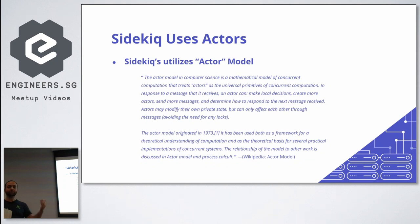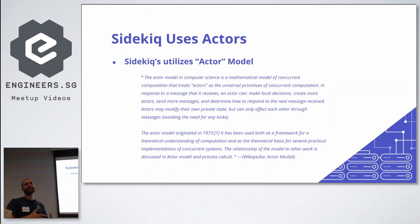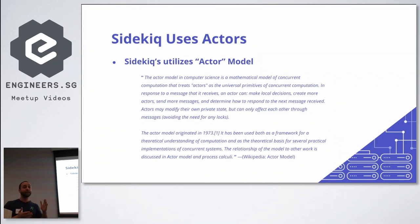Sidekiq started in earlier versions using Celluloid, a concurrency gem. But as Sidekiq evolved, Celluloid had a lot of memory overhead on performance. Starting around Sidekiq 4, the maintainer and team rewrote Sidekiq completely to remove Celluloid and write their own lightweight actor system. The motivation was not that Celluloid is bad, but that for Sidekiq's usage, Celluloid does way more than needed — so they trimmed it down and wrote their own actor system, which improved Sidekiq's performance significantly.